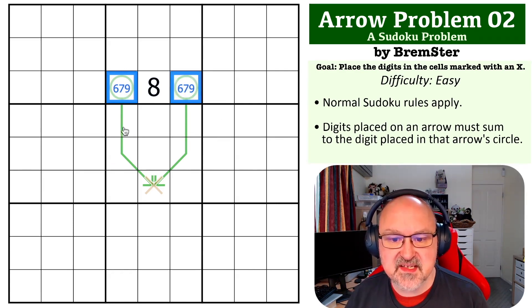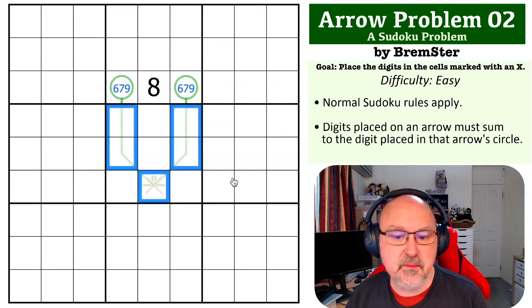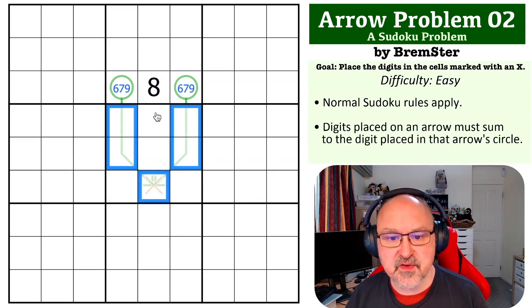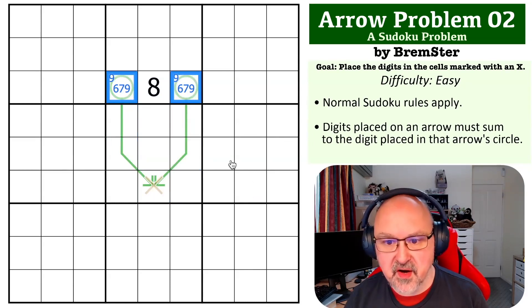Now, if these were 6 and 7, these would have to sum to 13, but the minimum I can put into these cells, ignoring the fact that this is the same cell, is 1, 2, 3, 4, 5, which is already 15. So I have to put a 9 in here.